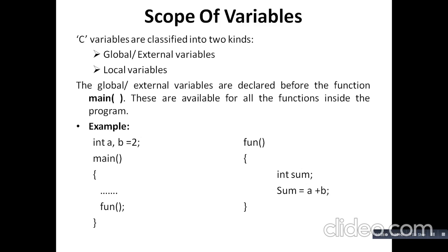Scope of the variable: there are two types of scope classifications. One is the global scope variable, also called external variable, and the second is the local variable. Global or external variables are declared before the function main in the global declaration section. These variables are available to all functions inside the program.